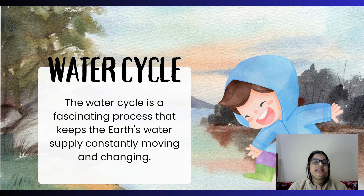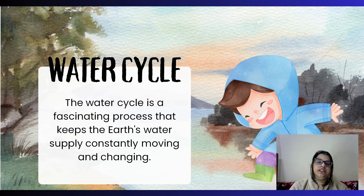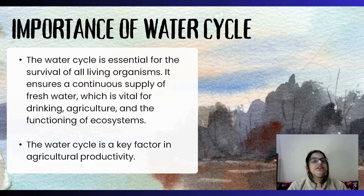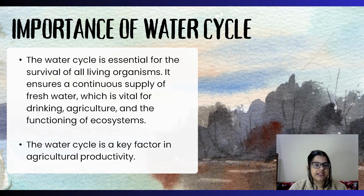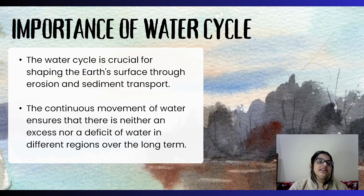The water cycle is a very fascinating process and the water supply is constantly moving. It is very essential for any living organism's survival. It ensures a continuous supply of fresh water, which is very important for drinking. The water cycle is also a key factor for agriculture and productivity. Water is crucial to shape the surface of the earth.